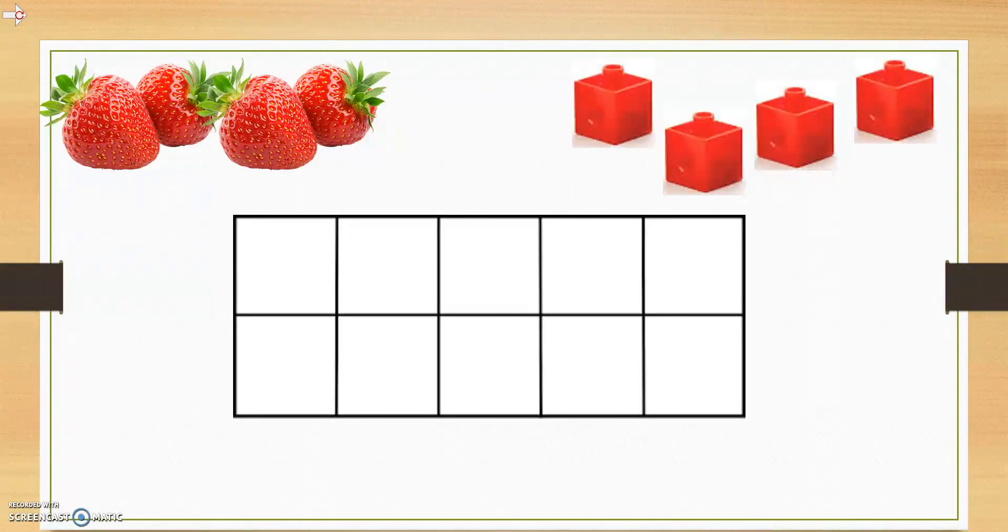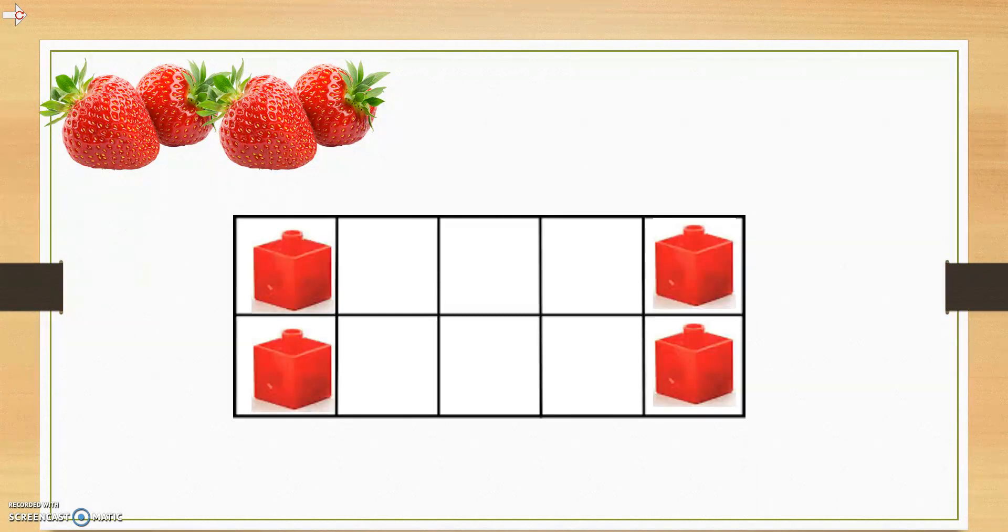Now, can you represent the amount of strawberries you see on the 10 frame? We know there are 4 strawberries, so we are going to use 4 cubes to show this on the 10 frame. There are many different ways that you can put the cubes on the 10 frame. For example, you might put them this way.